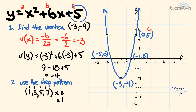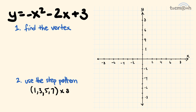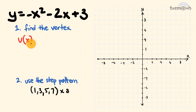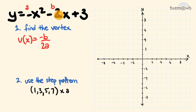Let's look at another example. We're going to graph y equals negative x squared minus 2x plus 3 in two easy steps. First off, we find the vertex. We have a, which is equal to negative 1. We have b, which is equal to negative 2. And we have c, which is equal to 3 — which is also the y-intercept.